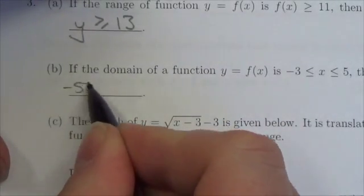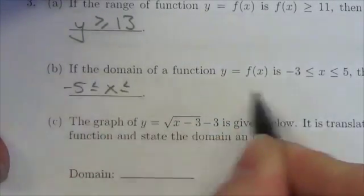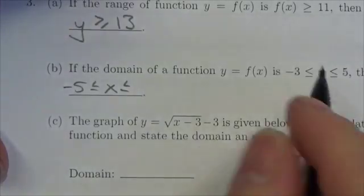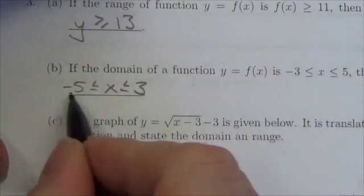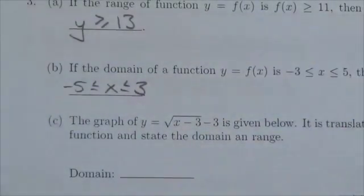Well, 2 to the left of negative 3 is negative 5. What's 2 to the left of 5? Positive 3. So my answer is the new domain would be negative 5 to 3.